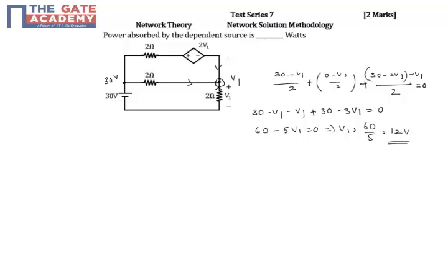So I'll give a name to this as I. This I equal to 30 minus 2v1 minus v1 by 2. This is 30 minus 3v1 by 2.